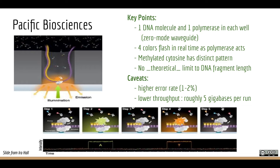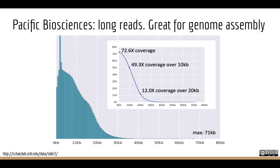PacBio was the first technology to really challenge Illumina. Throughput wasn't as high but you could sequence really long molecules — today you can easily get 50,000 bp sequencing reads. That's like a jigsaw puzzle with 10 big pieces: each piece has so much information you can stitch it together quickly. The mean fragment length is around 9–10 kb and some reads reach 71,000 bp. Illumina attempted to acquire PacBio but the deal fell through on antitrust grounds.